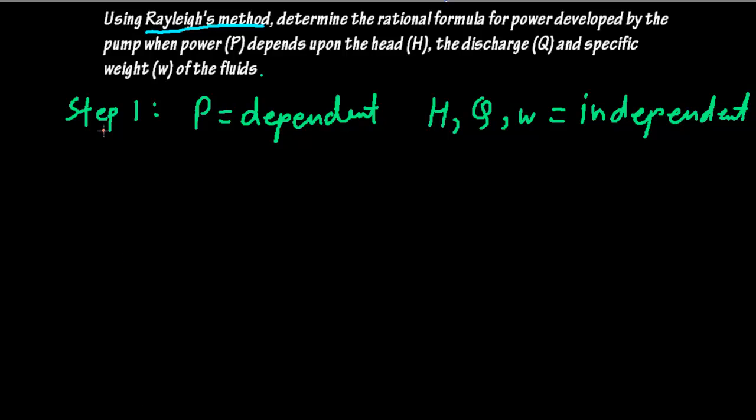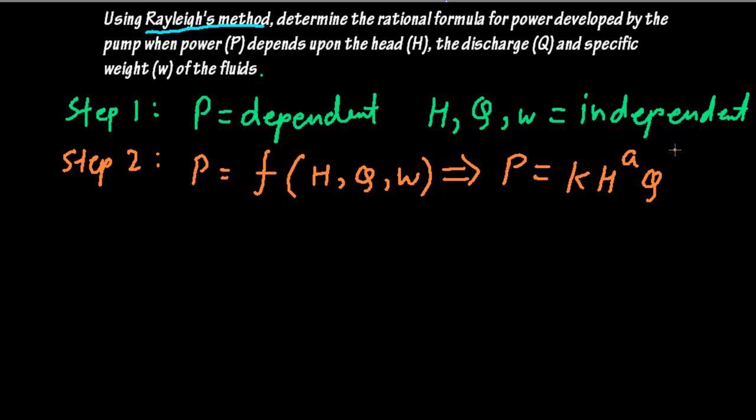Once you determine them, step two: we will represent the dependent quantity as a function of independent quantities. We will write it as P equals k times H raised to a times Q raised to b times W raised to c, where k is some constant.